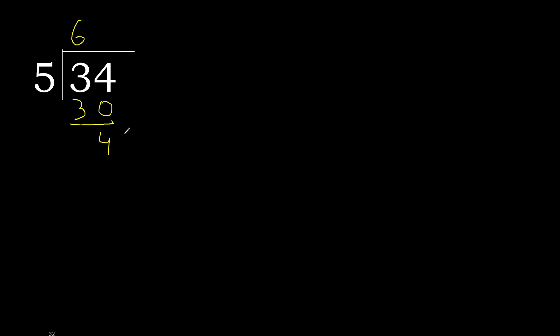There is no next number, therefore complete. Always complete with 0 — here with a decimal point. 40. 5 multiplied by 8 is 40. 40 minus 40 is 0.